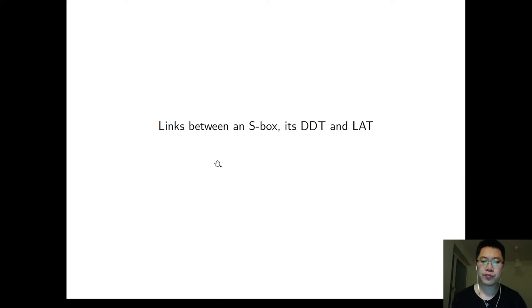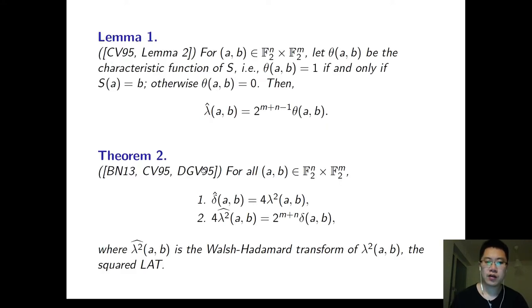We can build the links between S-Box's DDT and LAT with the help of Walsh-Hadamard Transform. In Lemma 1, you can see that when we apply Walsh-Hadamard Transform to the LAT, we can obtain the characteristic function of S. It means we recover the S-Box.